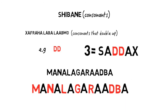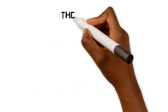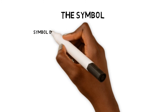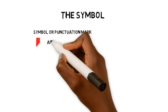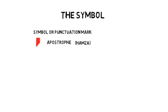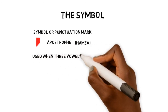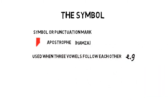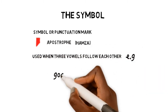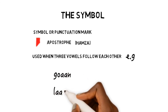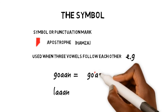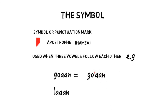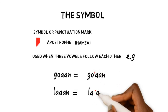Last but not least, the Somali alphabet has a symbol — I call it a symbol or a punctuation mark. In Somali it's called a Hamza, and in English it's called an apostrophe. The Hamza is used when three vowels follow each other. For example, G-O-A-A-N becomes Go'an, and L-A-A-A-N becomes La'an. All of these are Somali words.